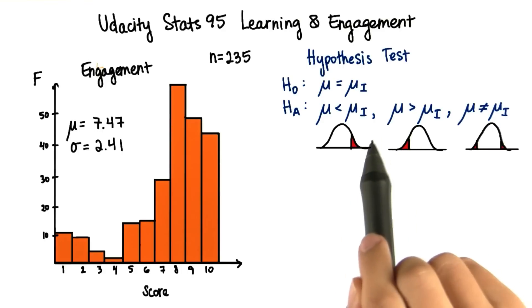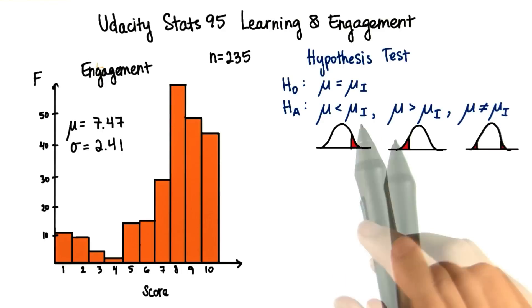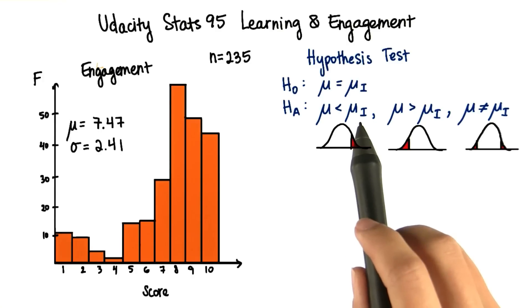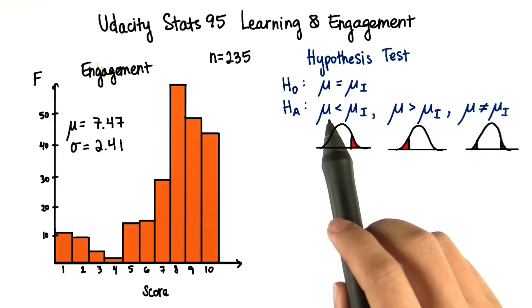These two alternative hypotheses are one-tailed tests. If our sample mean lies out here in the critical region, significantly higher than the current population mean, then we're guessing that the population parameter after the intervention will be greater than the current.